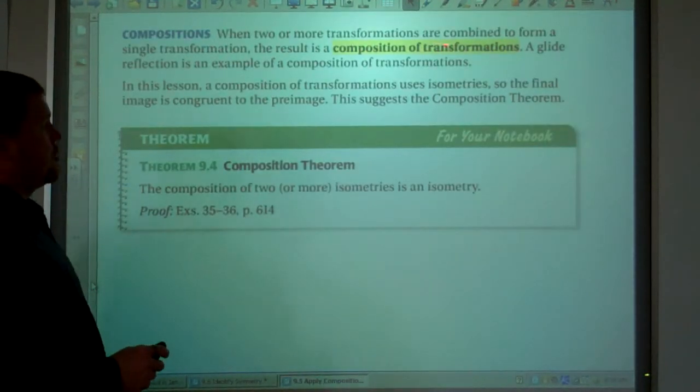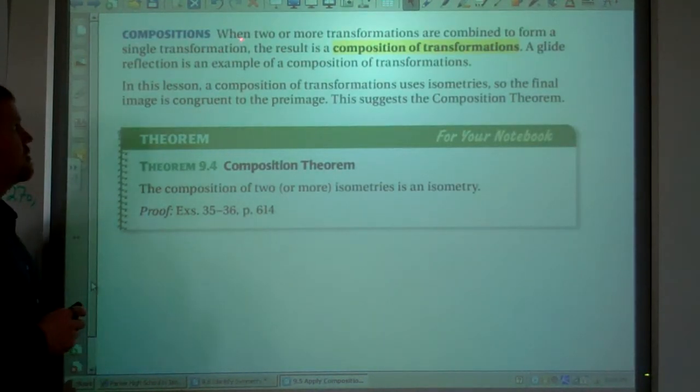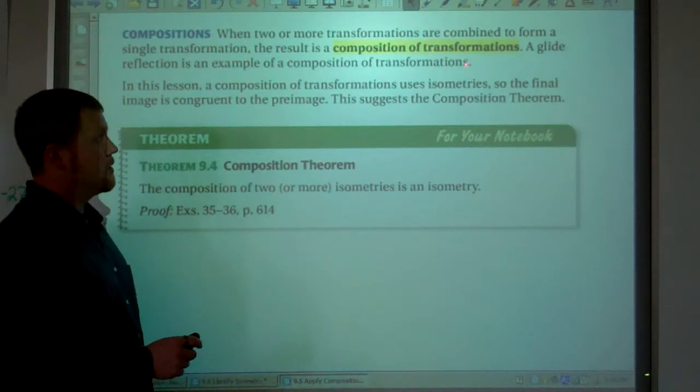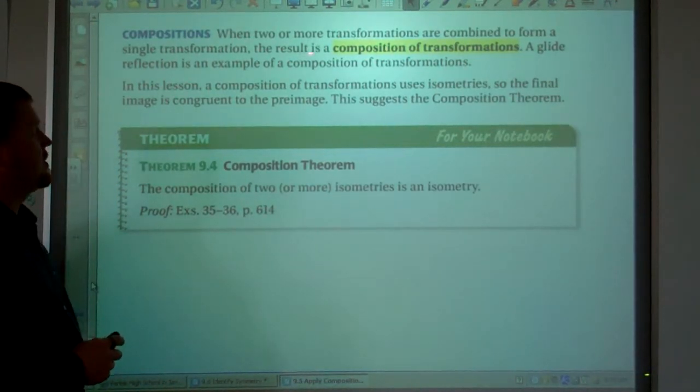Alright. When two or more transformations are combined to form a single transformation, the result is a composition, like we've talked already. Glide reflection is one example.